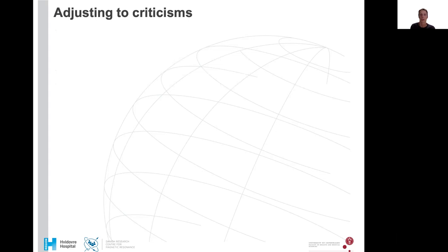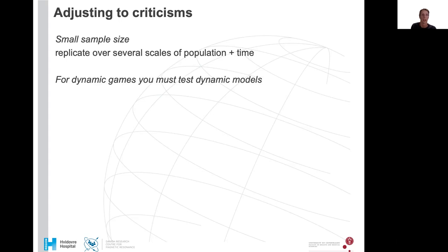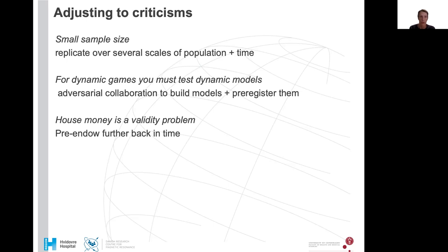So we also want to adjust future studies to criticisms that we have received. One of the most often mentioned was that we have a small sample size. So we really want to replicate our results over several scales of both population and timescales. We have heard that for dynamic gains, we also must test dynamic models. And we are engaged in an adversarial collaboration to build such dynamic models, and then also pre-register them. House money is a validity problem. And we would actually like to pre-endow this amount even further back in time so that participants really feel like it is their money when they come and actually perform the experiment.